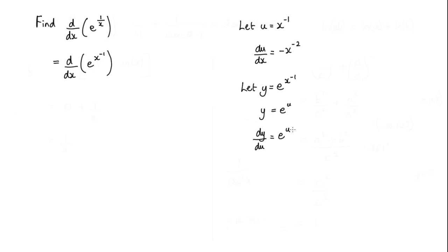Now what we want is dy by dx. So dy by dx is dy by du multiplied by du by dx. dy by du we know is e to the u. That's multiplied by du by dx which is negative x to the negative 2.